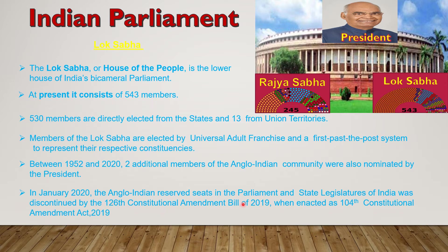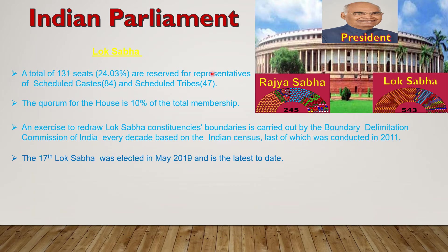This was enacted as the 104th Constitutional Amendment Act 2019. This amendment bill and amendment act is also very important from an exam perspective. Lok Sabha represents the common people of India, so the members of Lok Sabha are elected through the general election by voting. A total of 131 seats are reserved for representatives of Scheduled Caste and Scheduled Tribes — 84 seats for Scheduled Caste and 47 seats for Scheduled Tribes. The quorum for the house is 10 percent of the total membership.